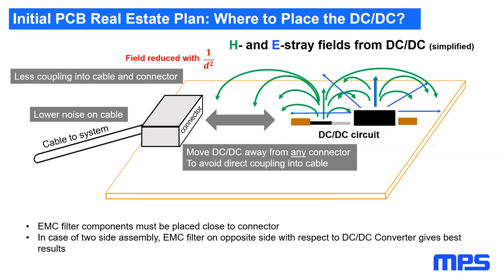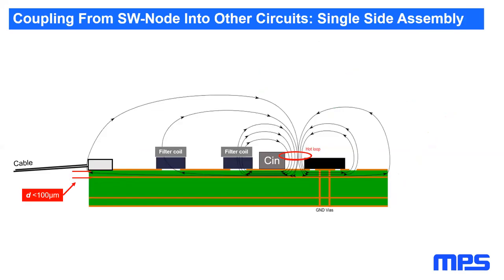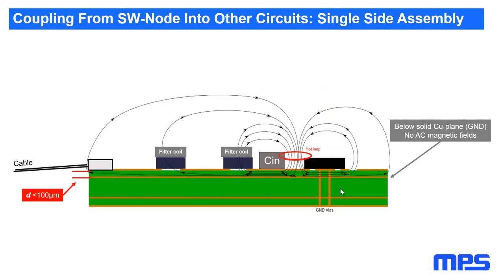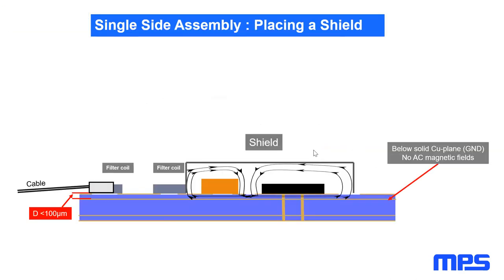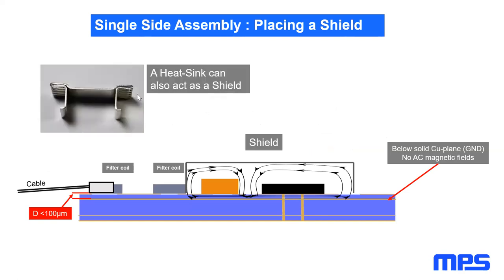EMC filter components should be placed close to the connector. Here's a side view of a single-side assembled PCB: the hot loop is here with the DC-DC buck converter and input capacitor. Below, in inner layer one, there should be solid copper ground. Without this arrangement, there is no quiet place to place EMC filter components or the cable connector — noise will be everywhere. You can place a shield on top of the DC-DC, input capacitor, and coil to contain the field. A heat sink can also act as a shield, for example for power LEDs on an LED driver board.